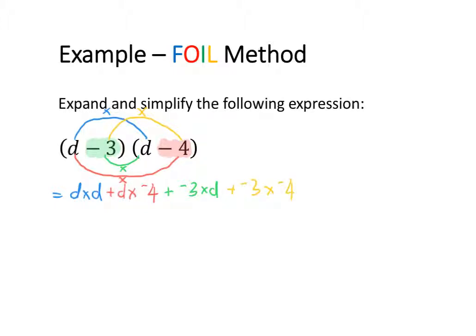So I can now simplify by going ahead and doing my multiplications. d times d is equal to d squared, plus d times negative 4 is negative 4d, plus negative 3 times d is negative 3d, plus negative 3 times negative 4 is equal to 12. Now to continue simplifying, I need to look for any like terms. I've got two sets of d terms, so I can use them as like terms to simplify.